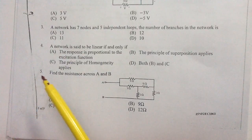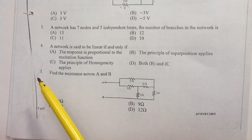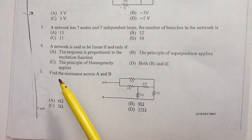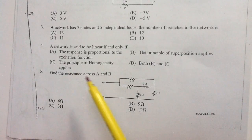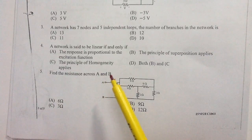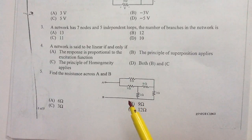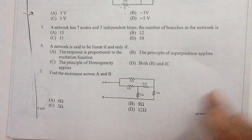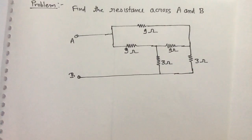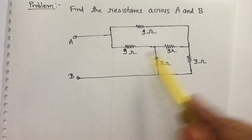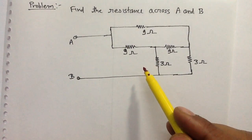Let us discuss problem number 5. We have to find out the resistance across A and B, and the circuit is given to us. How do we approach this question? I have drawn it again.